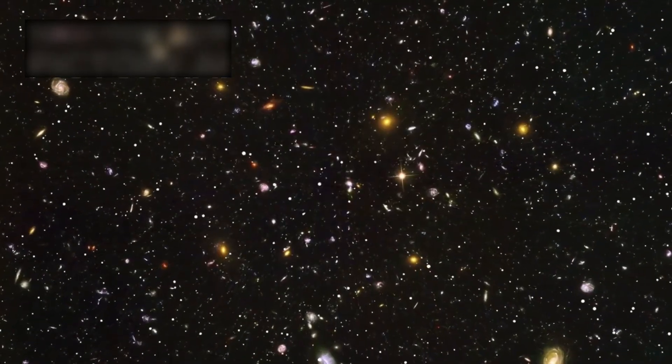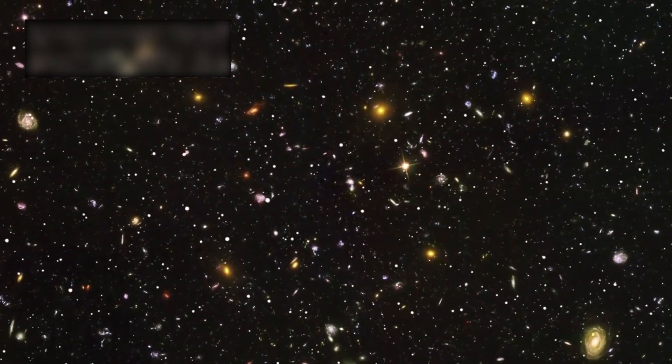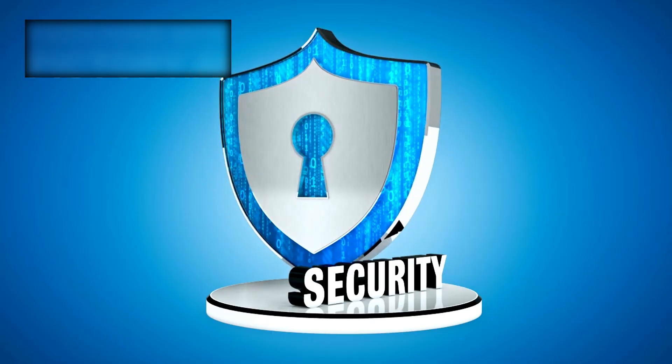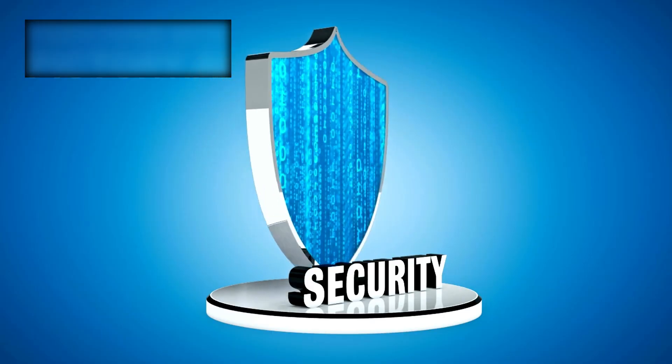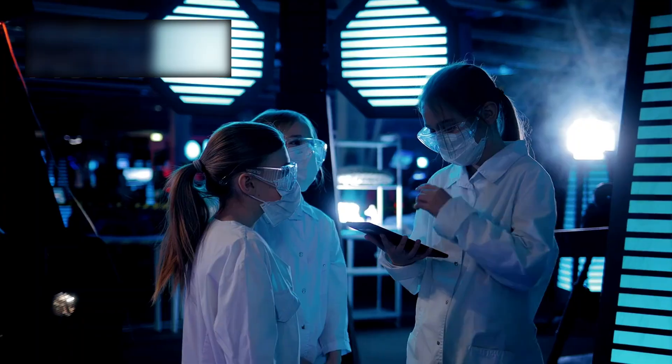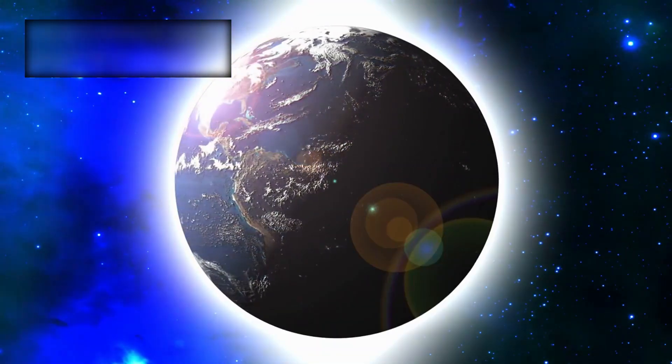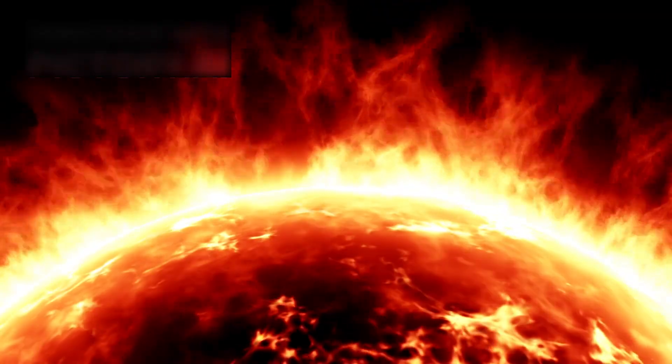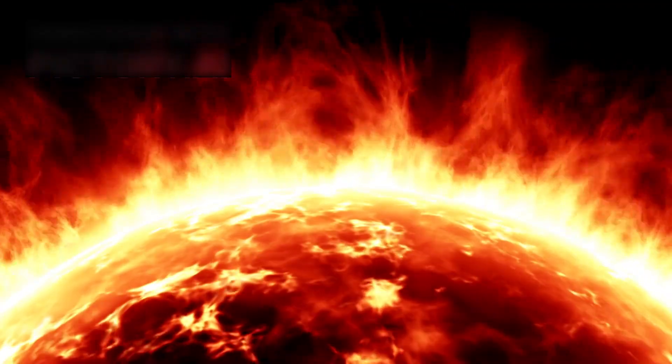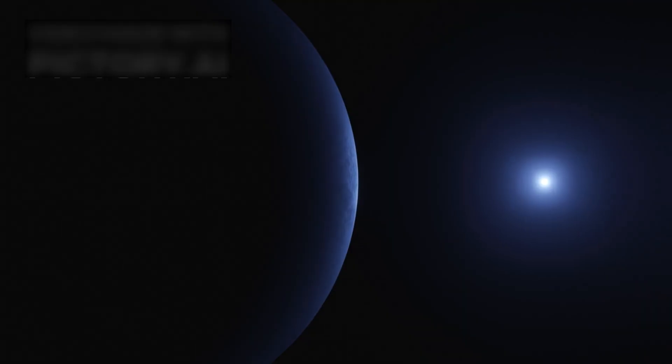For the first time, humanity understood that we are not drifting unprotected. We are wrapped in a delicate, shifting shield, a barrier separating us from forces we barely comprehend. Voyager showed us something else, the heliosphere breathes. It expands and contracts in rhythm with the sun's 11-year cycle. When the sun is active, the bubble grows. When it quiets, the bubble shrinks, letting cosmic radiation creep ever closer to Earth.